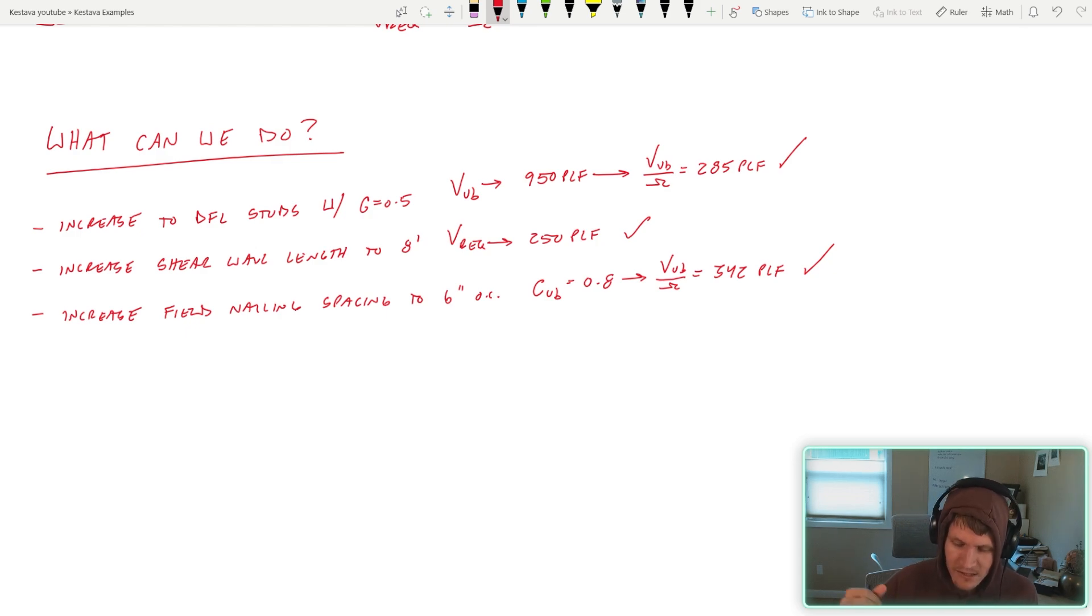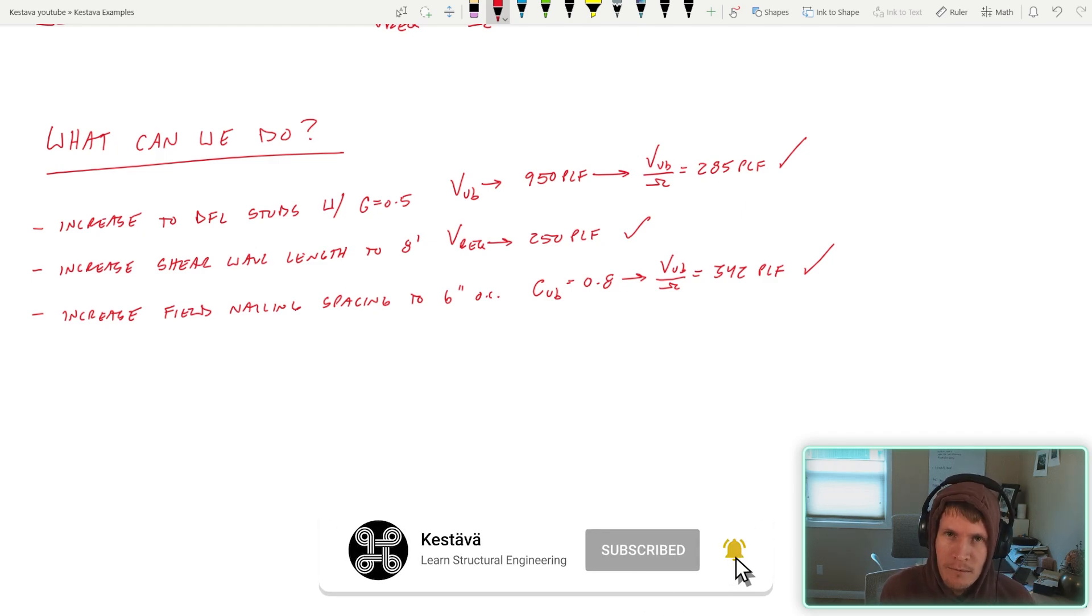We can increase the shear wall length from 7 feet to 8 feet. More shear wall length means more capacity, or the way I set it here is more shear wall length equals a lower demand per lineal foot because you have more feet of wall to divide your demand by. That brings the PLF demand down to 250, so that gets us in the area as well.